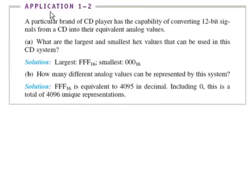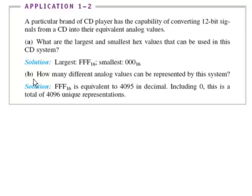There are five more applications of numbering systems. In this one, let's say we had a particular brand of CD player that has the ability of converting 12-bit signals from a CD into an equivalent analog value. This is going to be a 12-bit binary number. The question is: what are the largest and smallest hex numbers that can be used in this CD system? Take a look at this and see if you can figure out how that answer is derived. How many different analog values can be represented by this system?